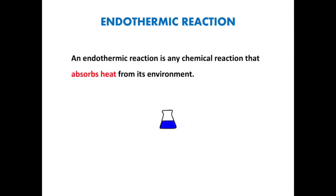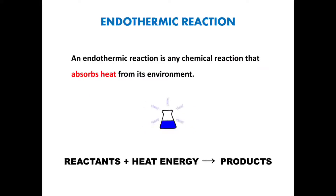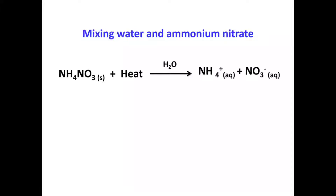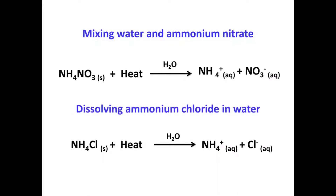An endothermic reaction is any chemical reaction that absorbs heat from its environment. During an endothermic reaction, reactants absorb heat from the surroundings to give the products. When ammonium nitrate is mixed with water, it absorbs heat from the surroundings to dissociate into ammonium and nitrate ions. Similarly, ammonium chloride, when dissolved in water, absorbs heat from the surroundings to dissociate into ammonium and chloride ions.